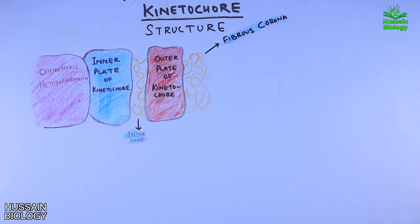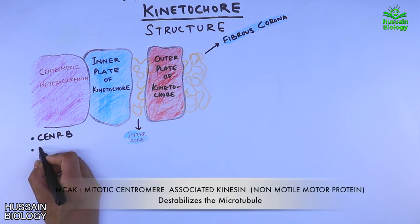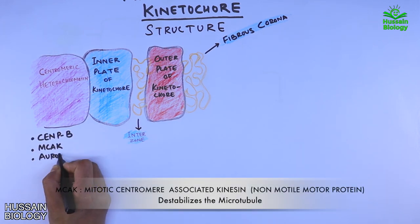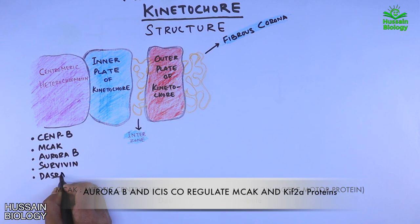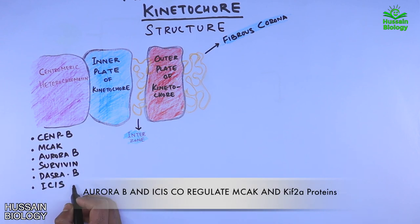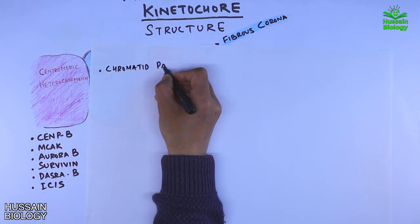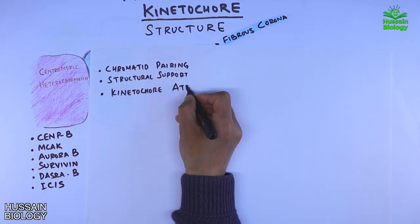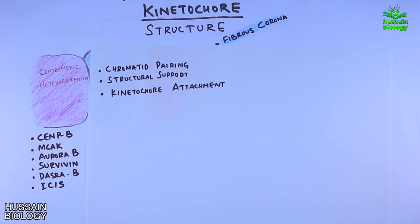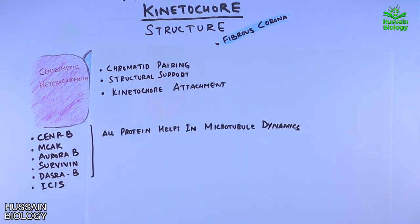The centromere region contains proteins including CENP-B, MCAK, Aurora B, Survivin, Dasra B, and INCENP. In general, the centromere region helps in chromatid pairing, structural support, and kinetochore attachment, and its proteins help in microtubule dynamics.